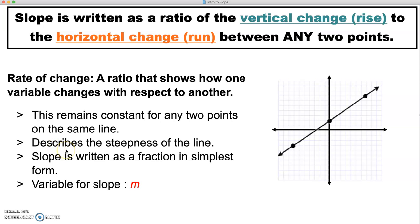Slope describes the steepness of the line, so how steep or shallow the line is. Slope is usually written as a fraction in its simplest form, and the variable we use for slope is m. So whenever we write equations, when you see m, that's going to be our slope.